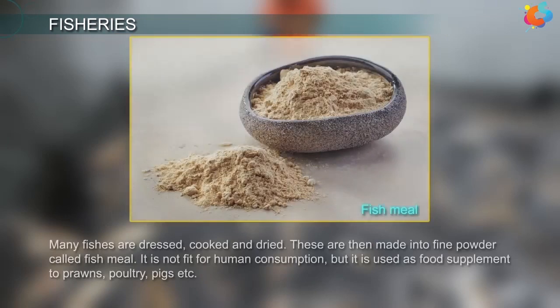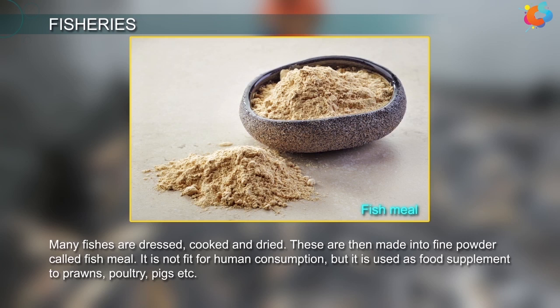Many fishes are dressed, cooked and dried. These are then made into fine powder called fish meal. It is not fit for human consumption but is used as a food supplement for prawns, poultry, pigs, etc.